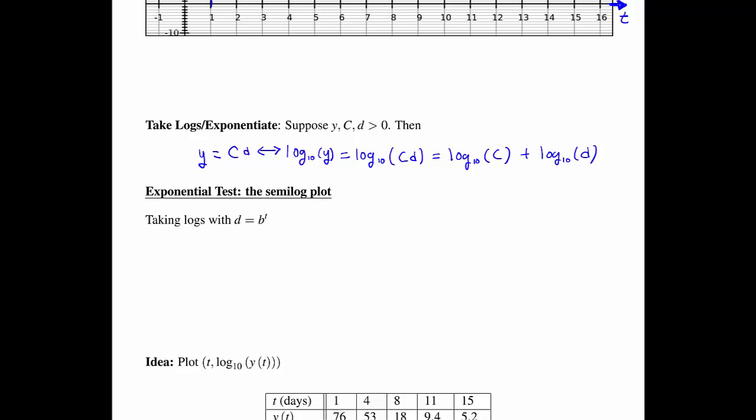In the exponential test, we use a semi-log plot. If we do this taking logs, but now in the particular case that d is equal to b to the t, we have that y equals c times b to the t. That's an exponential relationship with c and b greater than zero. This is equivalent to log of y being equal to log of c plus the log of b to the t. We can use the third identity for logarithms, that we can take that power, t, out in front. So this is just equal to t times log of b. We could reflect and see log y equals a constant plus t times another constant. That's the description of a line, where the slope is the log of b and the y-intercept is the log of c.